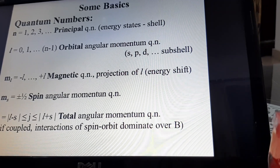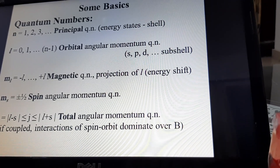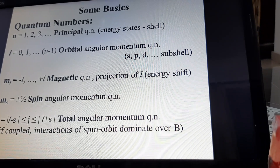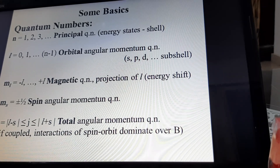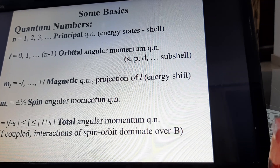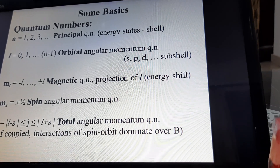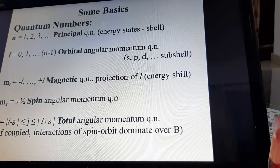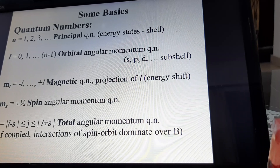These numbers describe the number of shells present in the atom. The second quantum number is the orbital angular momentum quantum number, written as L, and the values of L are 0 to n-1. It represents the number of sub-shells present in the shell, and they are denoted by S, P, D, F, and so on.